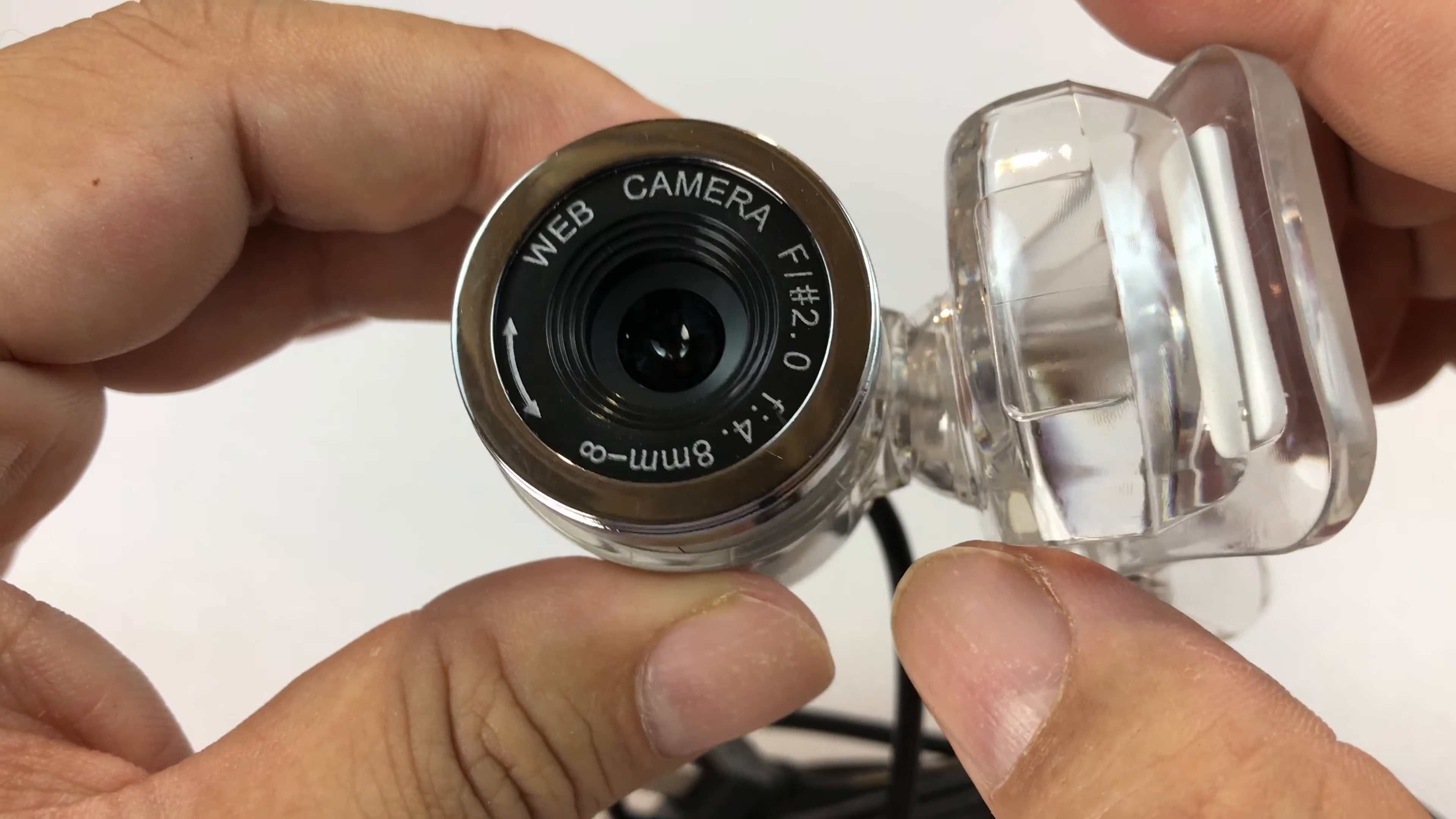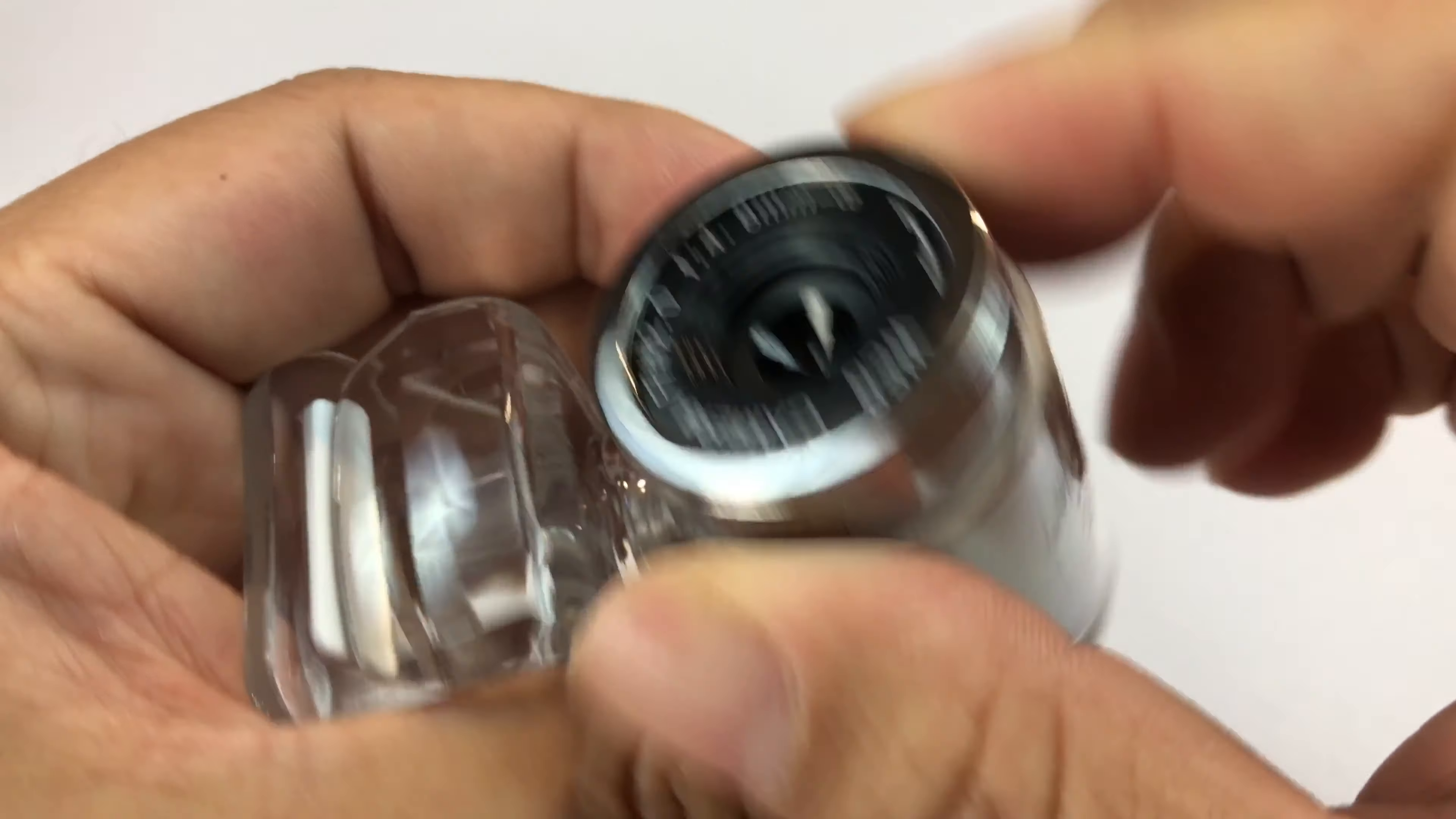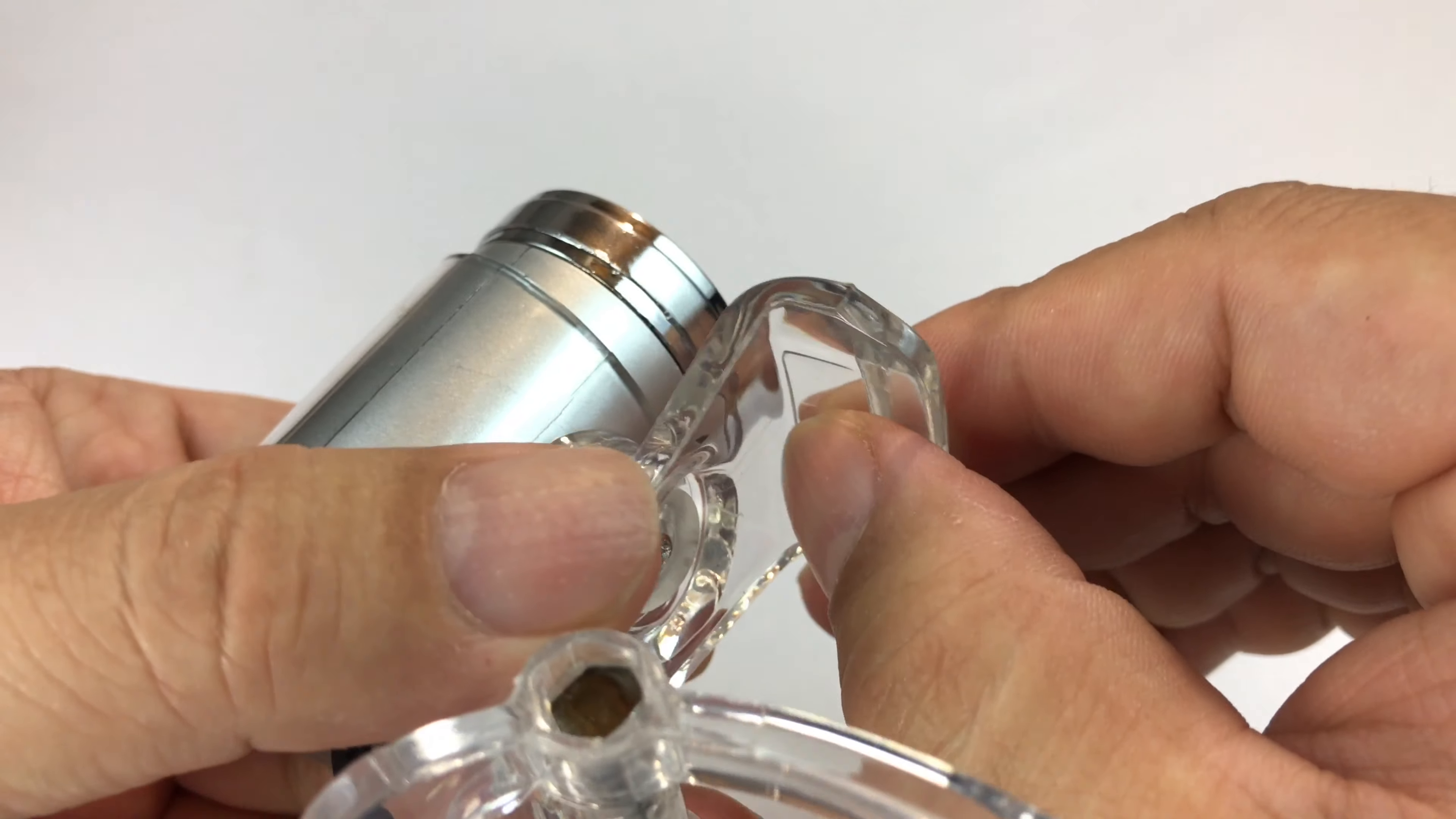As you can see there, it's an F2.0 stop and I'm assuming you can focus it by rotating this which you'll probably need to do depending on how far away you're sitting. You can see here it clips to the top of your computer screen.